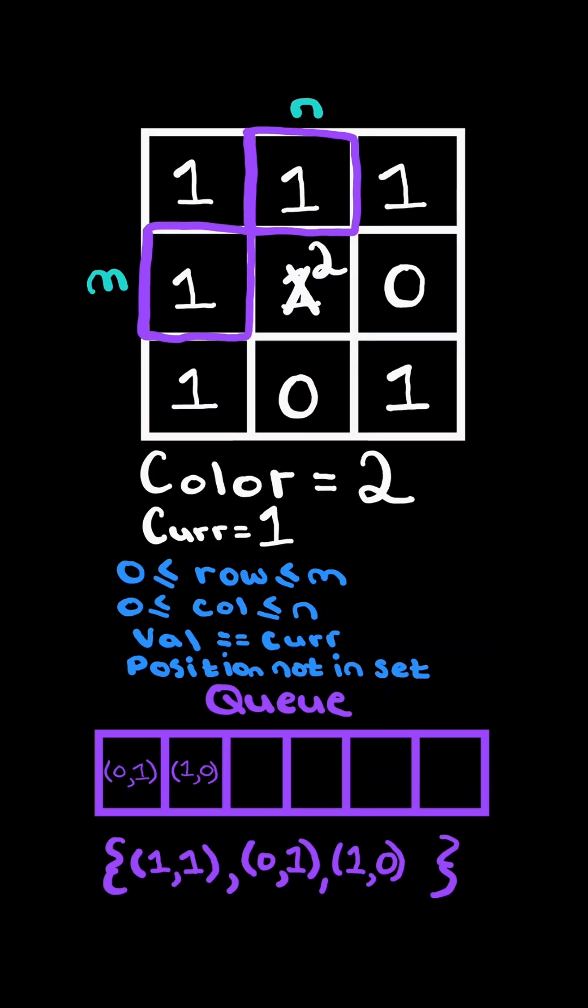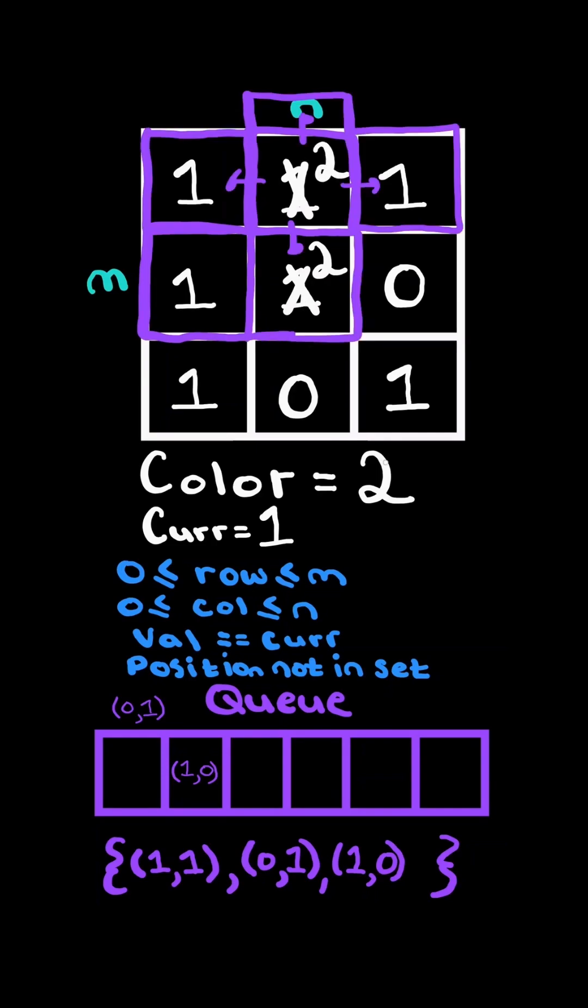And we continue this process while the queue is not empty. We pop from our queue and consider the position we popped. We update its value to the new pixel color 2. Now we add 1 to the position's row or column to consider its neighboring positions.